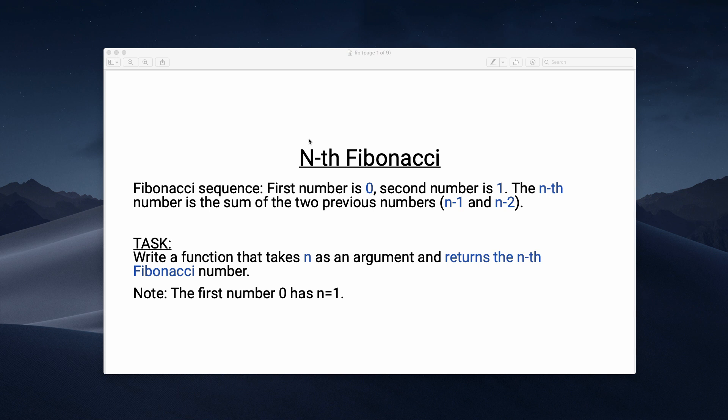Today we're going to solve a popular coding interview question called the nth Fibonacci number. This is a very popular beginner question where you should demonstrate that you can understand and implement a basic mathematical problem. I will show you three different solutions that really let you shine in the interview. We will start with the simplest approach and then continuously improve our solution to get faster code. I will also analyze the time and space complexity so you can practice Big O notation with me.